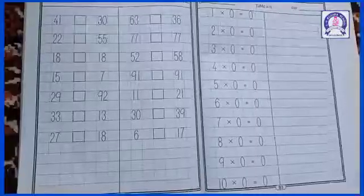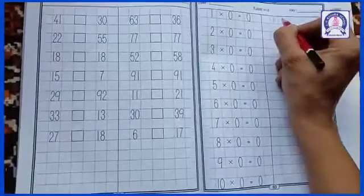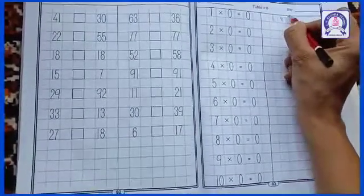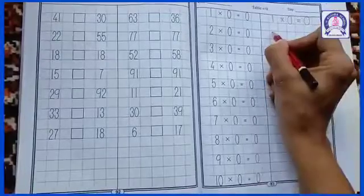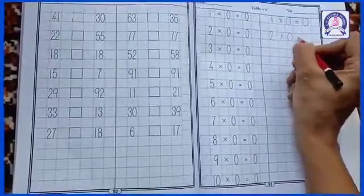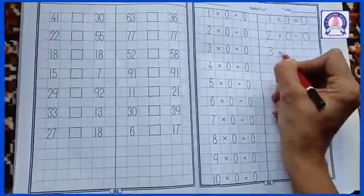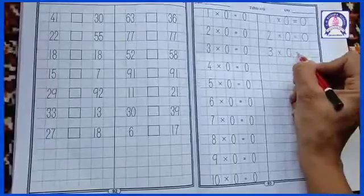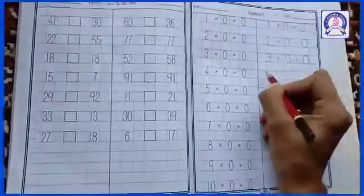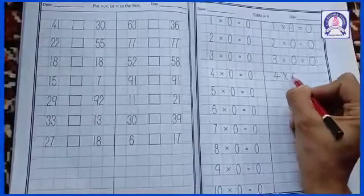Now let's start to write. One times zero equals zero, two times zero equals zero, three times zero equals zero, four times zero equals zero.